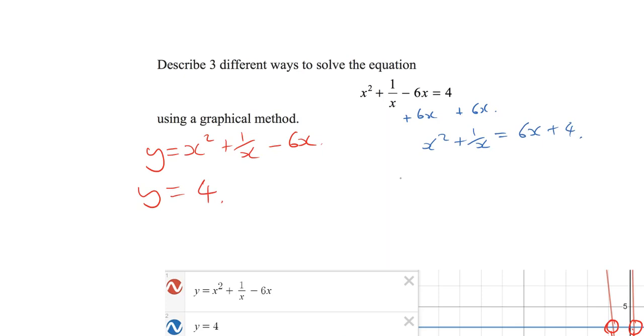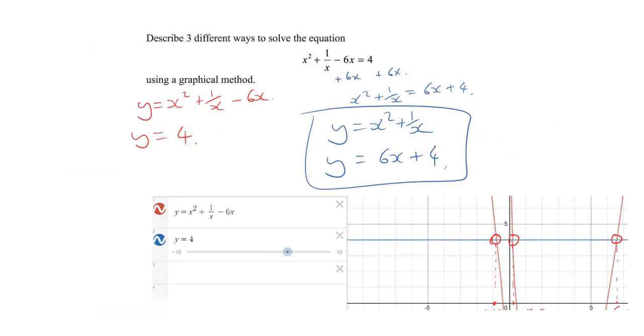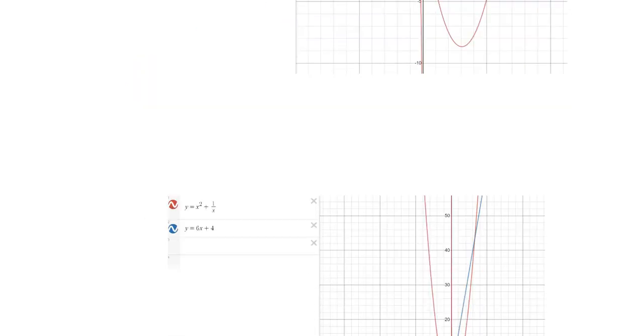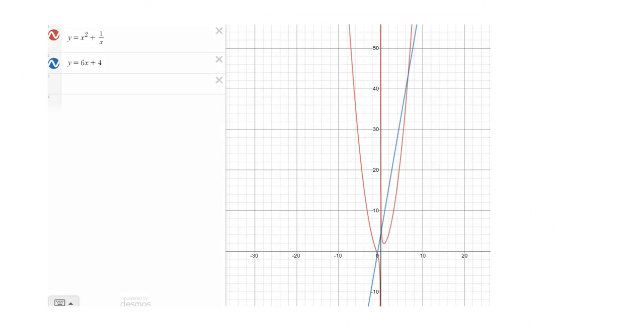So this is saying, I could also plot y equals x squared plus 1 over x and then 6x plus 4 and that would also give me the exact right answers. So remember, the answers are, we've already found them out, minus 0.779, 0.195 and 6.584. Well, if I plot those graphs, let's take a look at that.